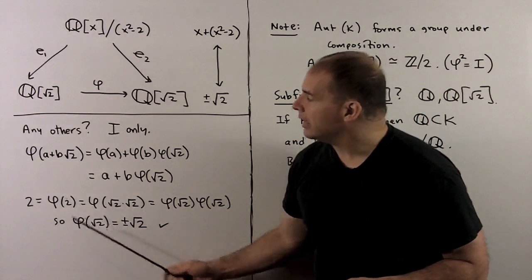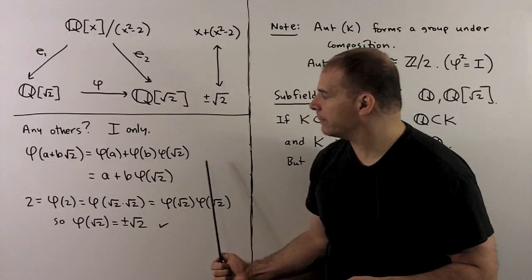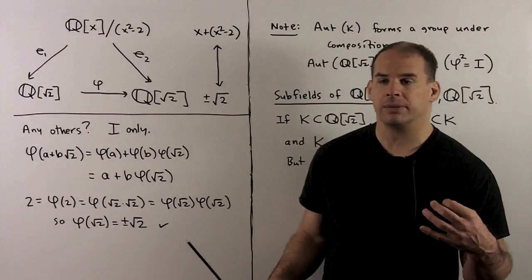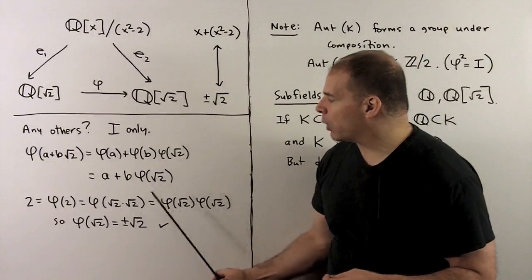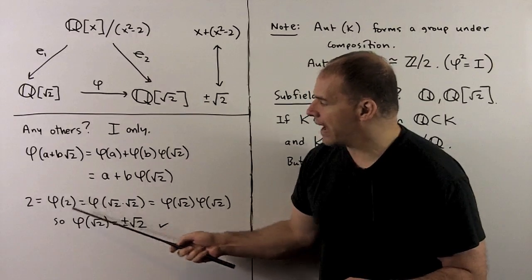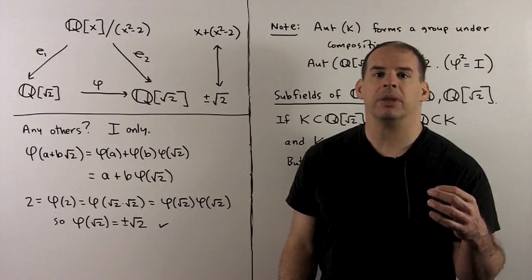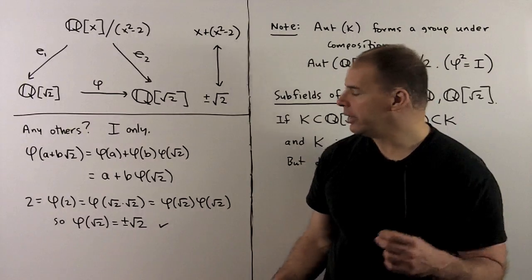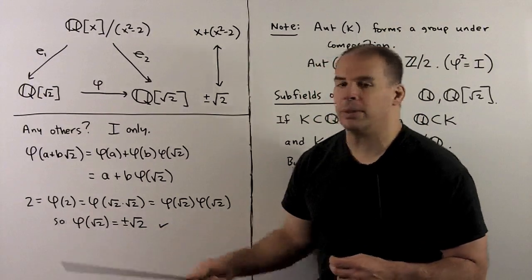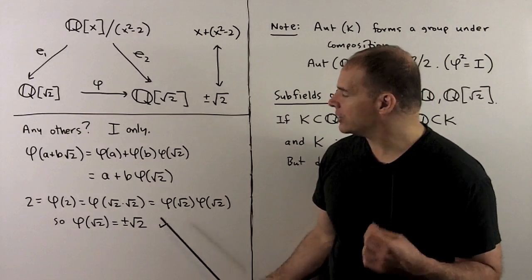To see that, apply phi to a + b√2 and separate terms. Since a and b are rational, they get sent to themselves. So everything is decided by where we send phi(√2). Now, phi(2) = phi(√2 · √2) = phi(√2)², and that must equal 2. The only possibilities are ±√2, so that gives everything.